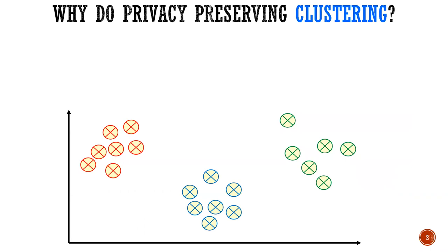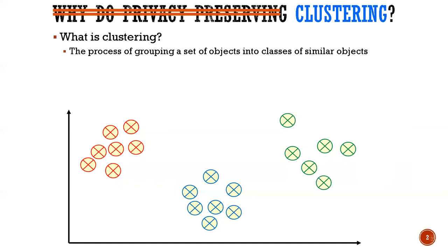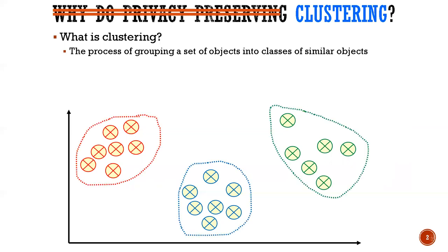So why do we consider this problem? The first question is: what is clustering? Clustering is an unsupervised machine learning problem that groups similar or closer items together. In this scenario, we have several points and we want to group them into three clusters — here we have a red group, a blue, and a green one.